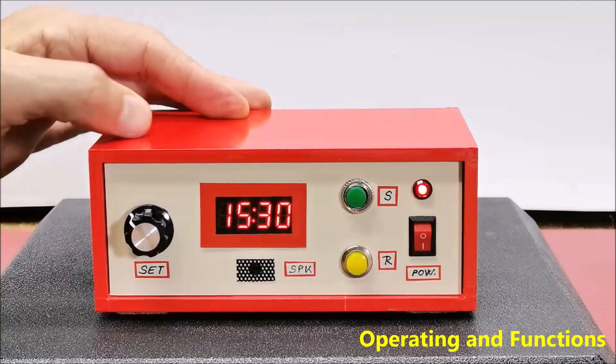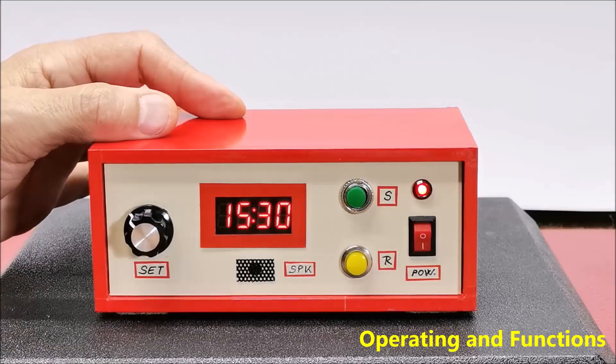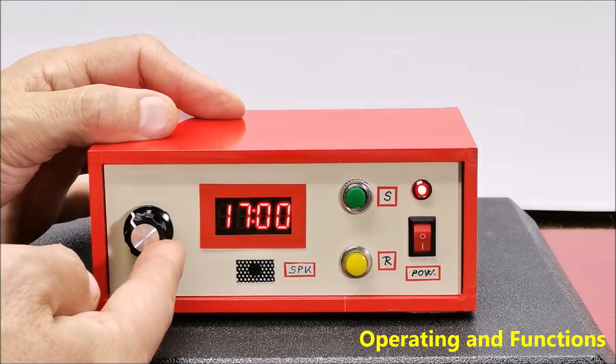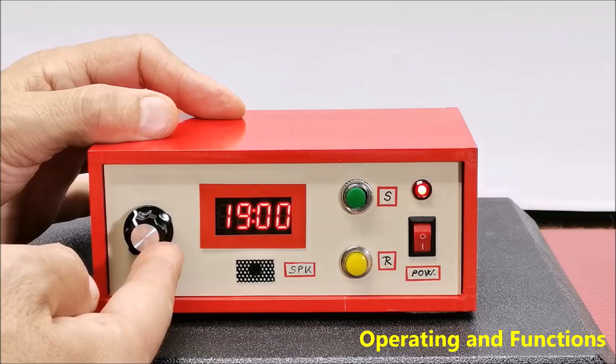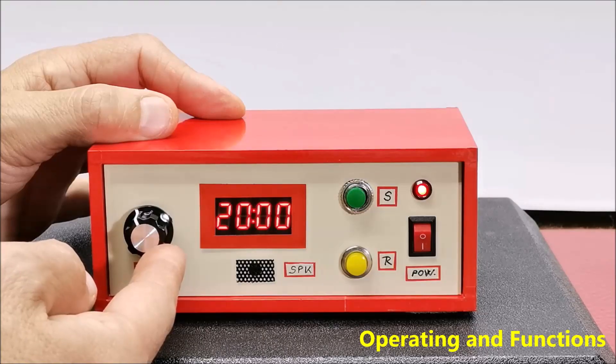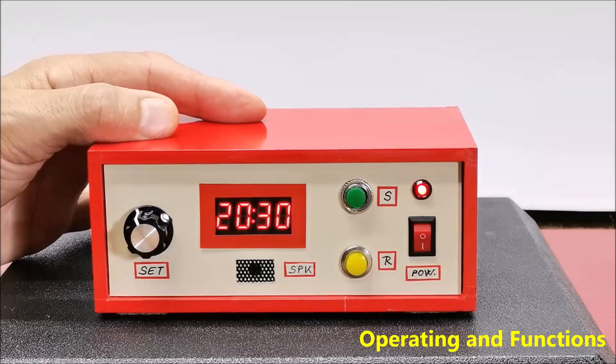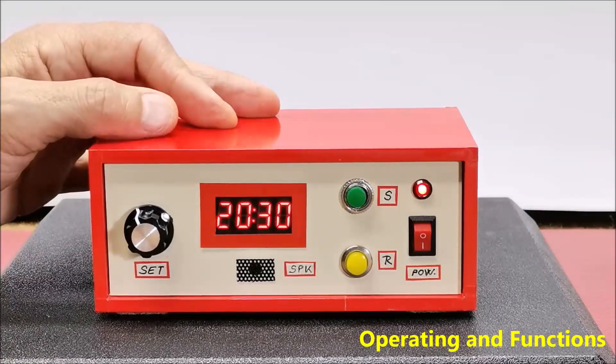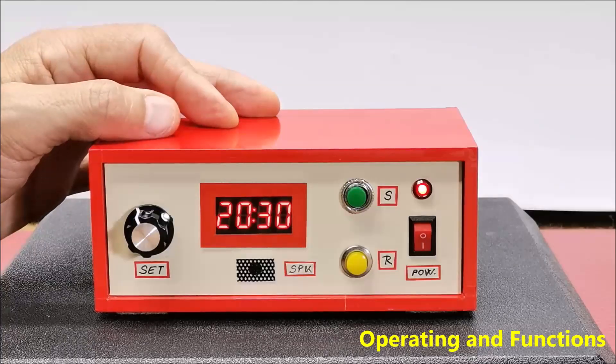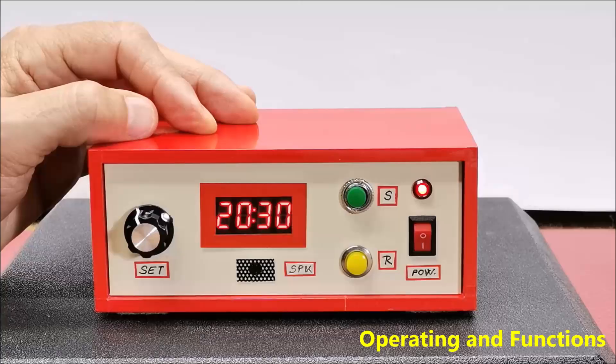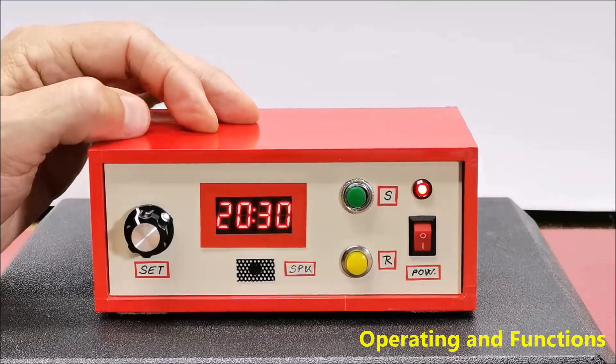As you can see in the explanation, the resolution for setting this timer is currently 30 seconds because for a kitchen timer this is quite enough. However, depending on our needs, it can be 10, 5 or even 1 second and is set in the code in the line define quantize interval and can be from 1 to 60 seconds.